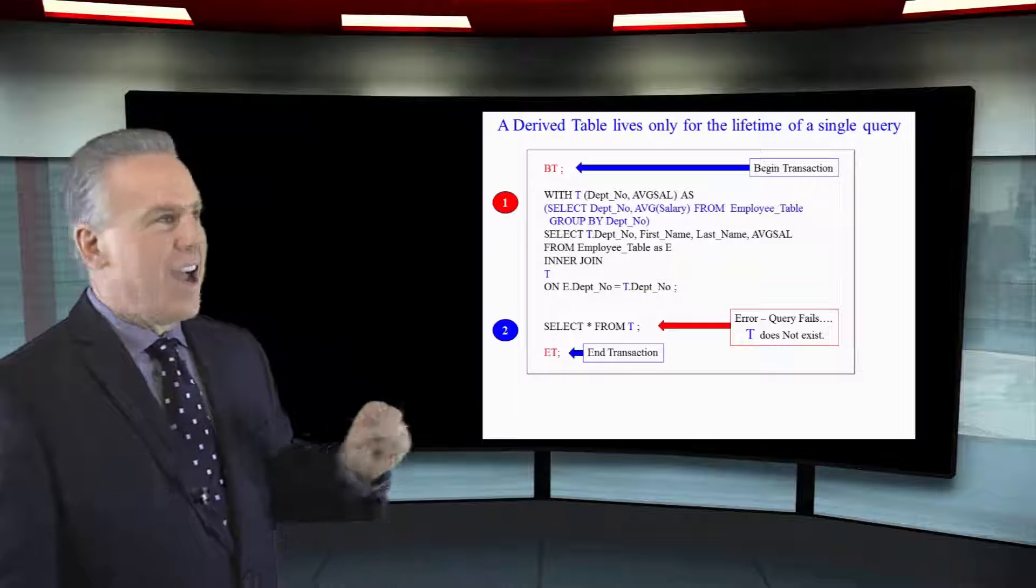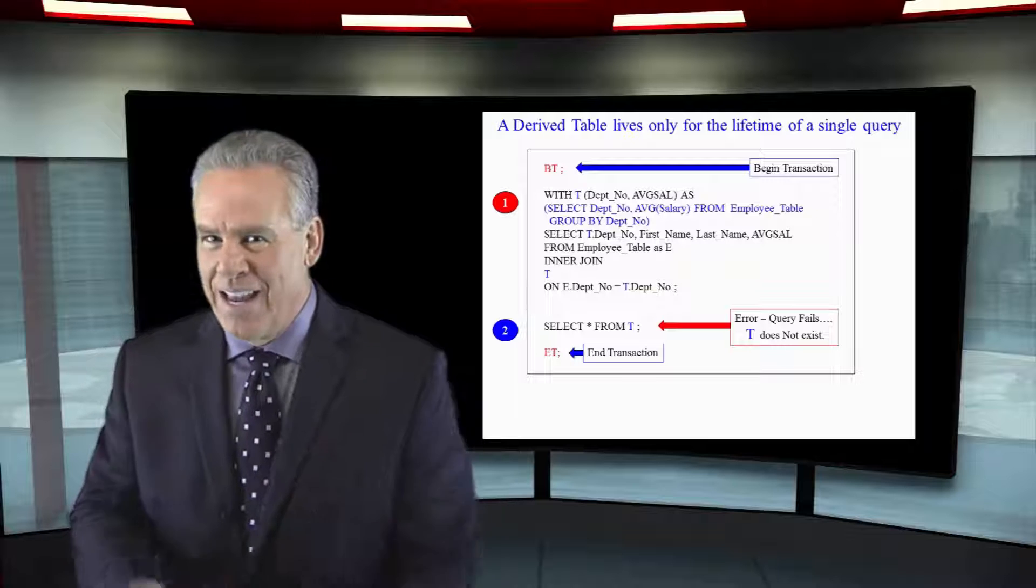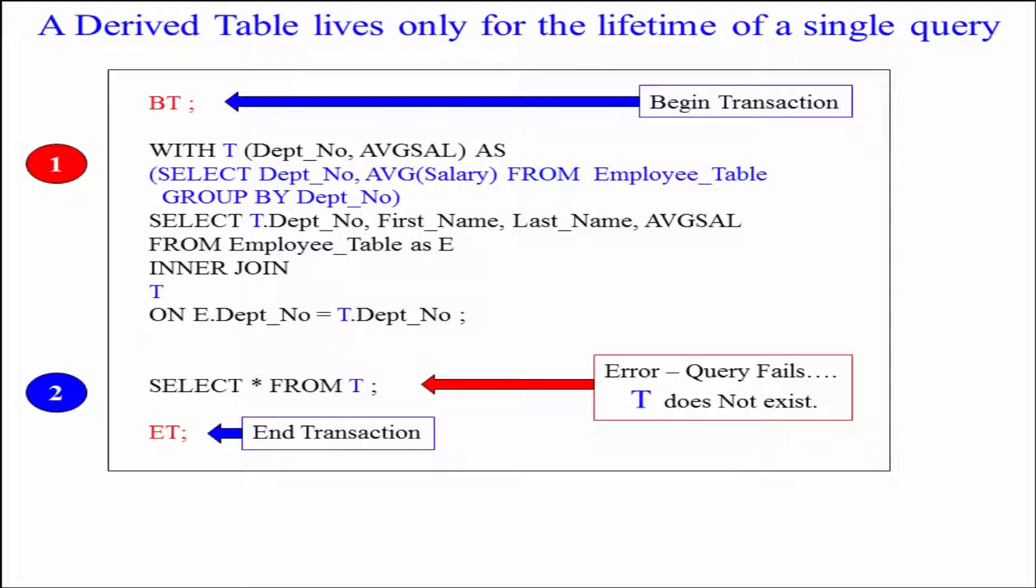So I actually said I'm gonna try to get a derived table to last longer, and so I said I'll do a begin transaction. I'll run my query with a WITH statement and I'll create that derived table, and since I'm in the same transaction I'll be able to select from it later. And it said error. I don't even know what you're talking about. That table doesn't exist.